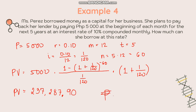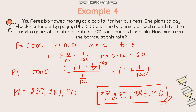So Miss Peres can borrow 237,287.90 pesos given that she will pay 5,000 pesos every month. The reason we used 1/120 instead of 0.0083 is that 0.10 divided by 12 is a repeating decimal — rounding it would affect the final answer, so using fraction form keeps the solution accurate. That's how you solve for present value and future value under annuity due and ordinary annuity.